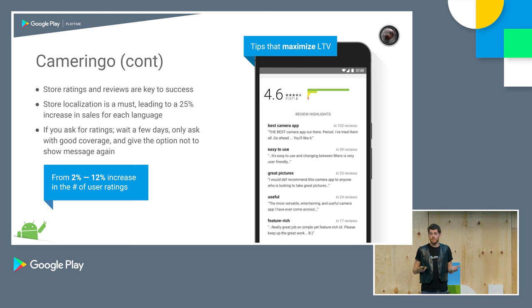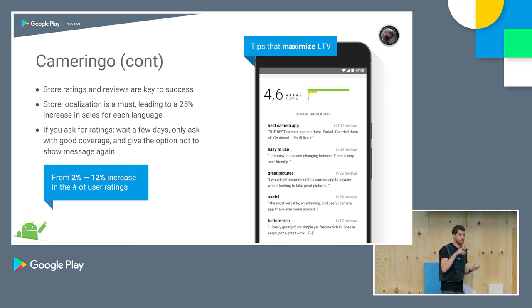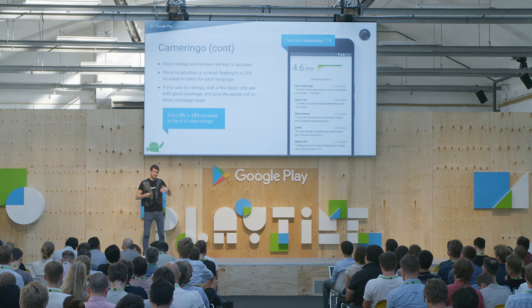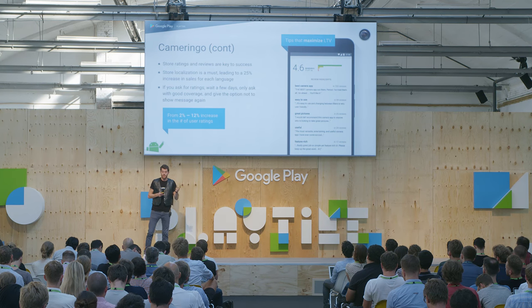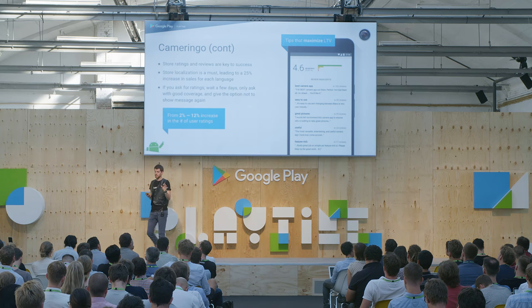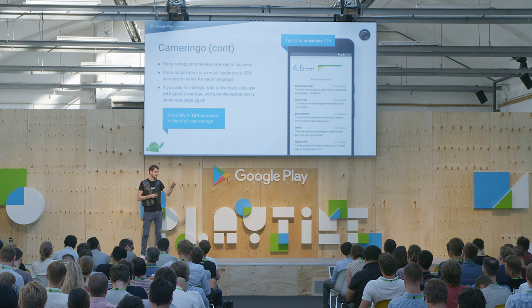They need those kinds of reviews because that's the word of mouth. So what are they doing to optimize it? They are super proactive with customer service — responding to bad reviews and good reviews, and actually actioning the feedback. Whenever they get feedback, it's real feedback so they work on it. Whenever they get praise, they ask the user to keep up with their engagement. They also try to maximize ratings with a user prompt — but only for loyal users, only when they have good network coverage, with a 'don't bother me again' option in the message, so they never annoy the user.